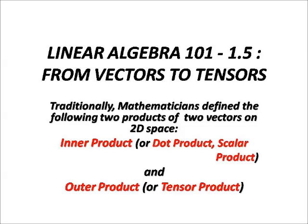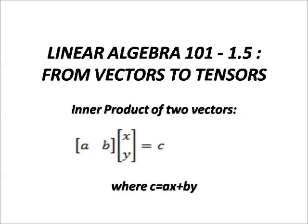Traditionally, mathematicians define the following two products for two vectors of 2D space: inner product or dot product (scalar product) and outer product or tensor product. Don't worry, we are going to give you some ideas right here.